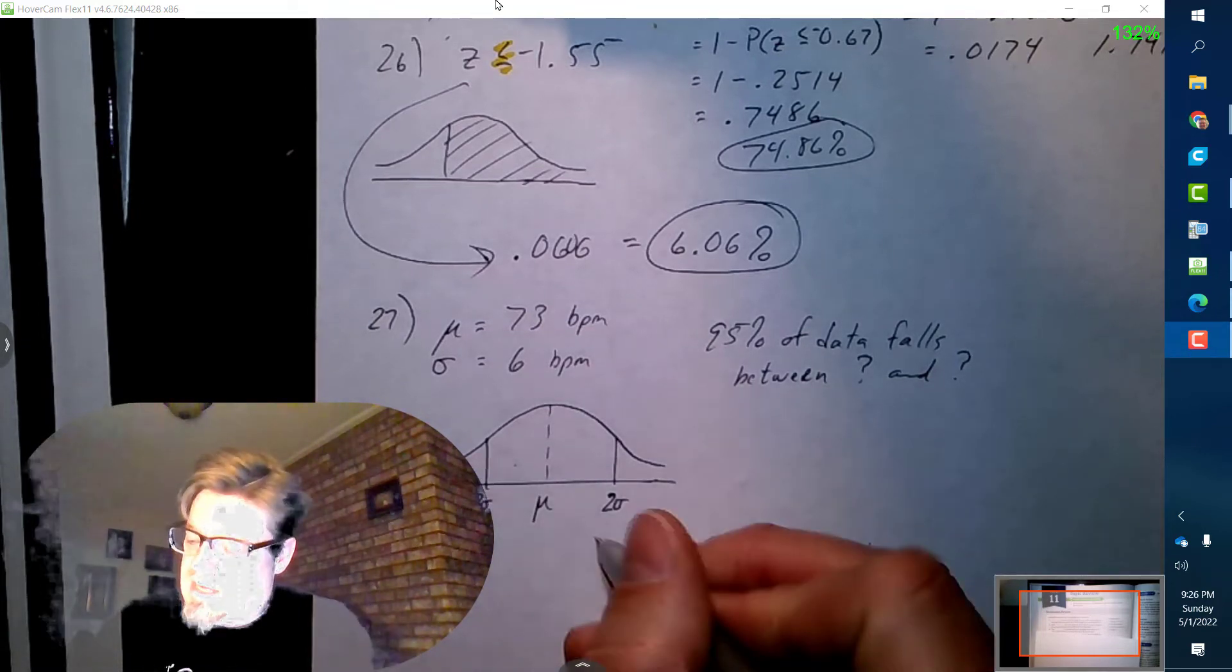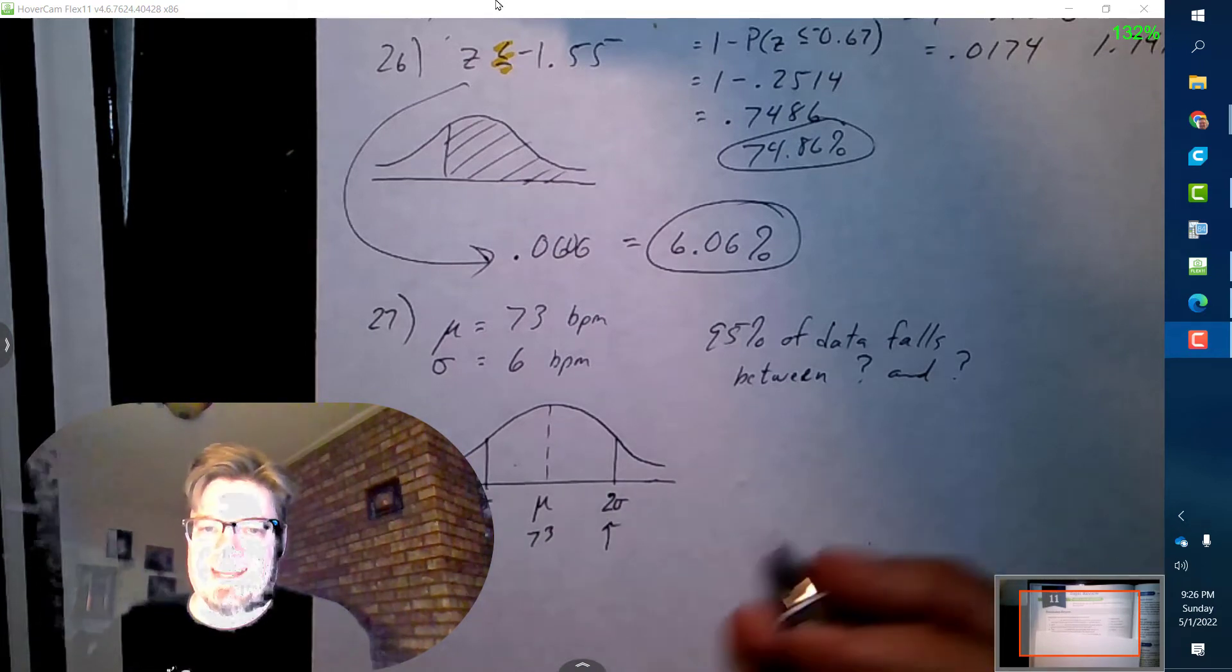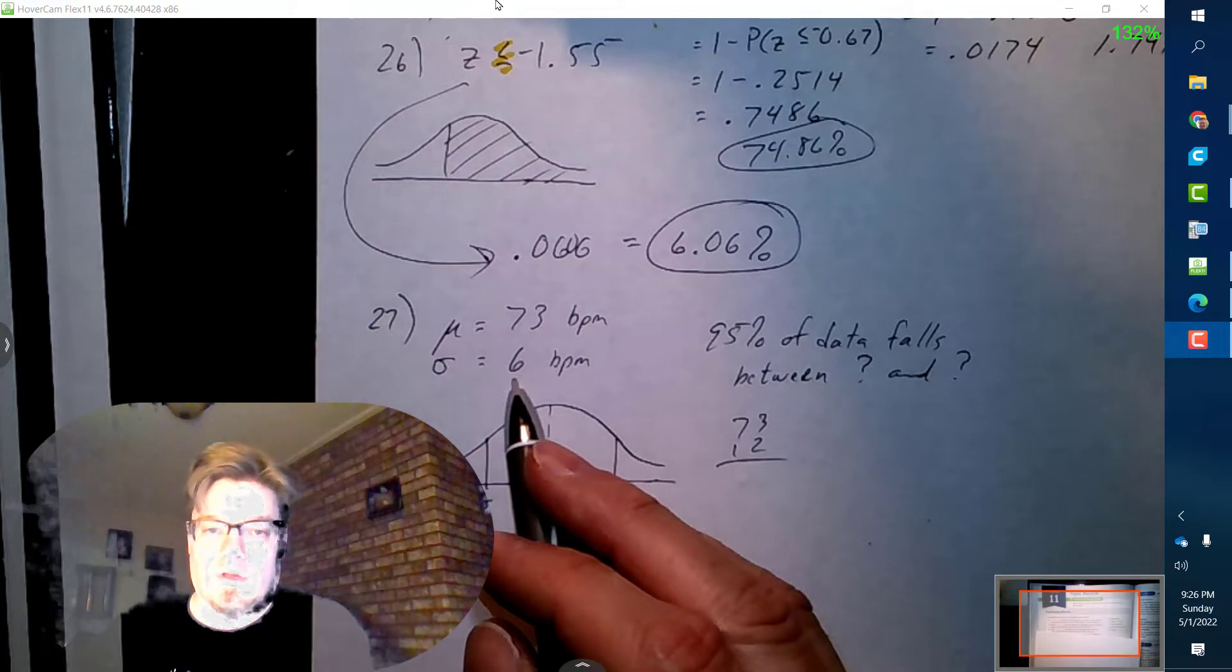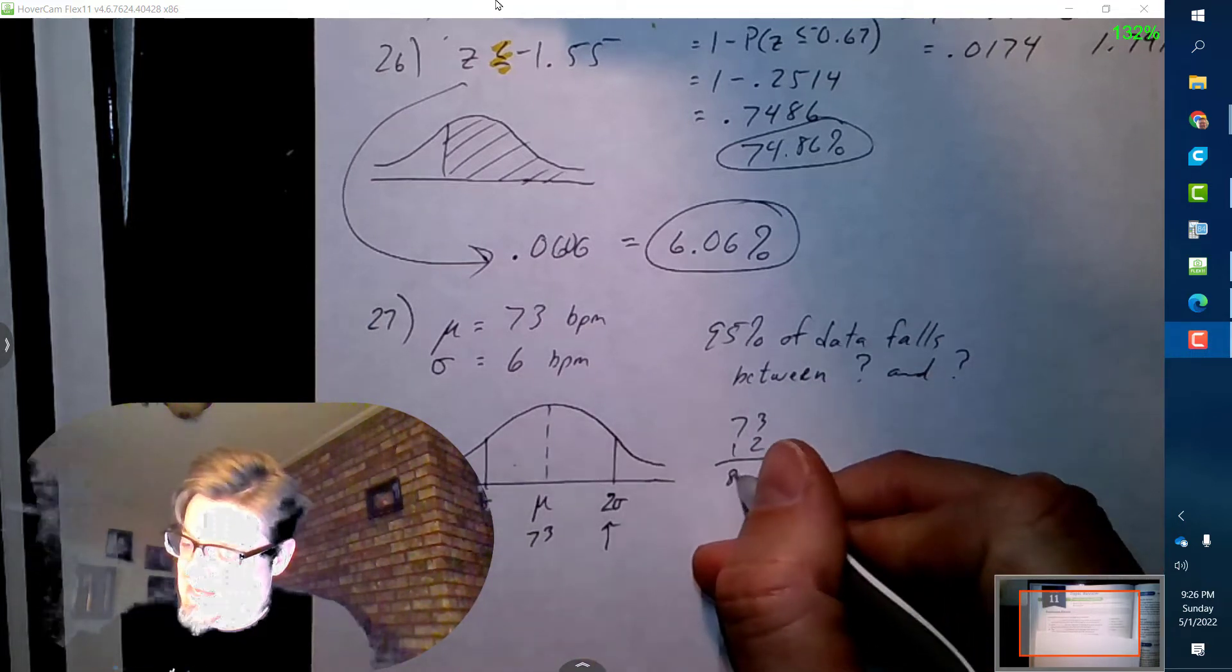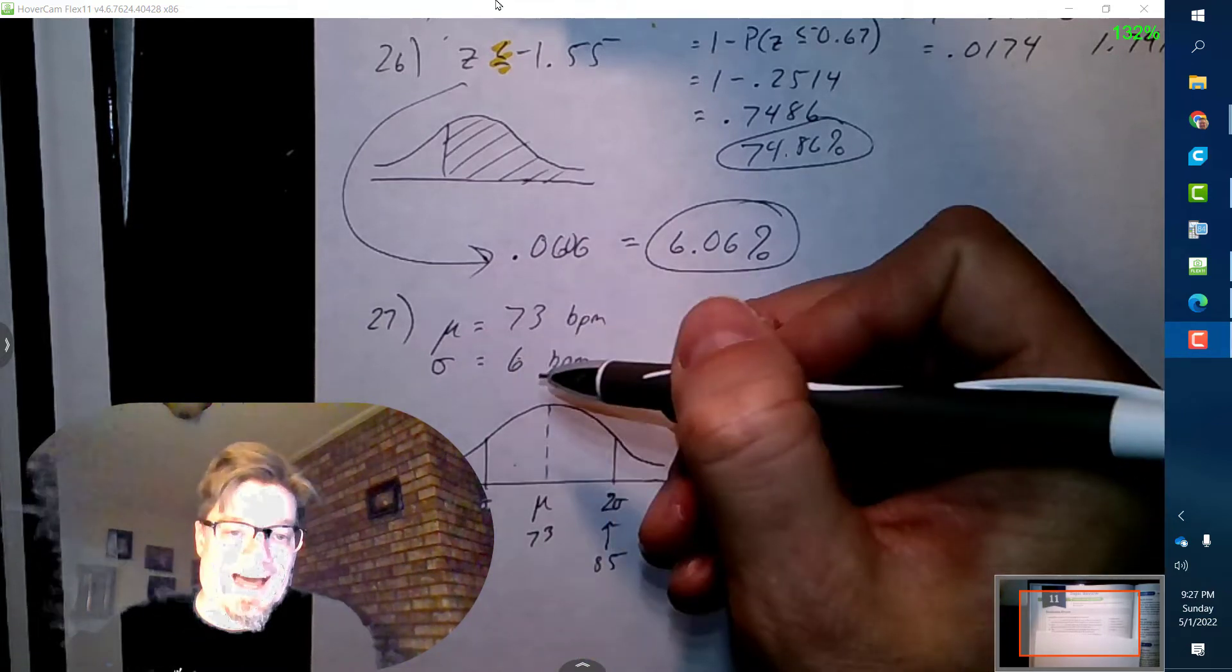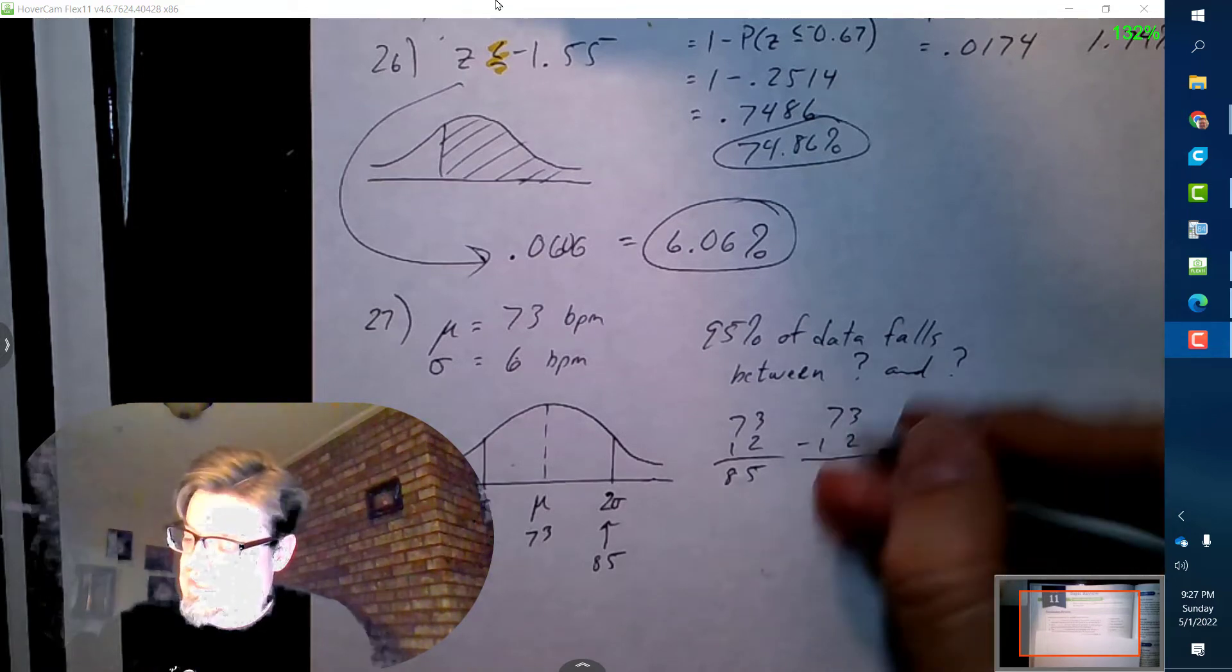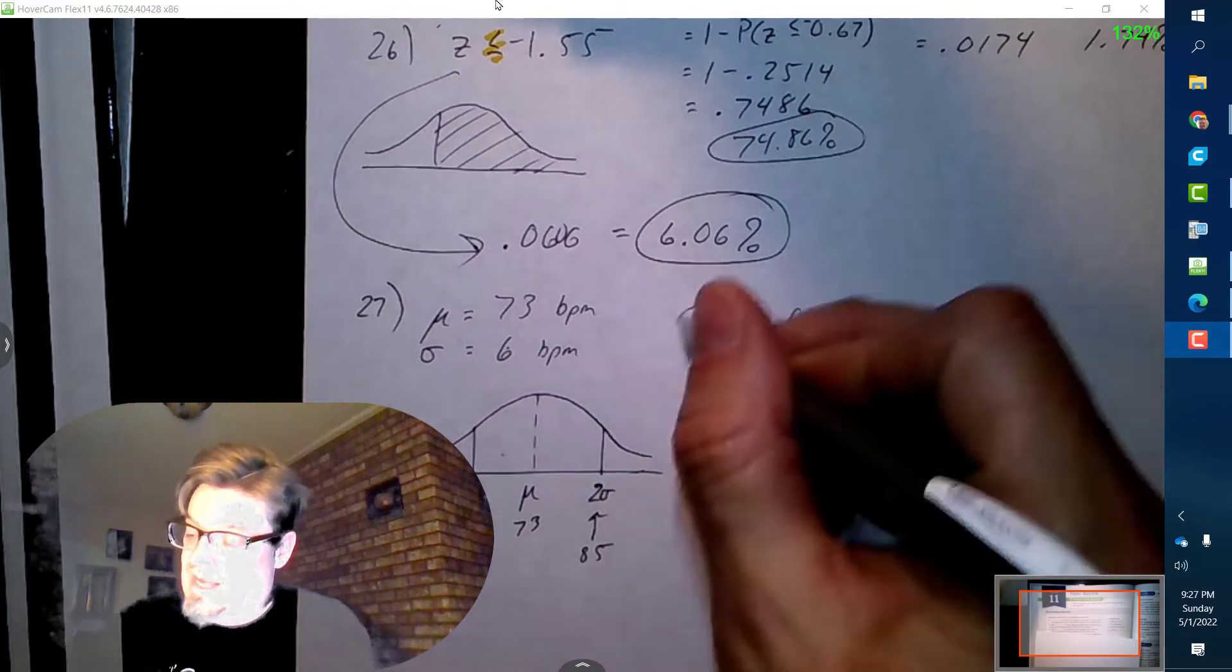If I'm going to go here, I know that this is 73 beats per minute. If I need two standard deviations, that would be like adding 12. One standard deviation, two standard deviations - so that is going to be 85. And then if I'm going to go 12 behind the mean, I have to go 73 minus 12, which is going to give me 61.